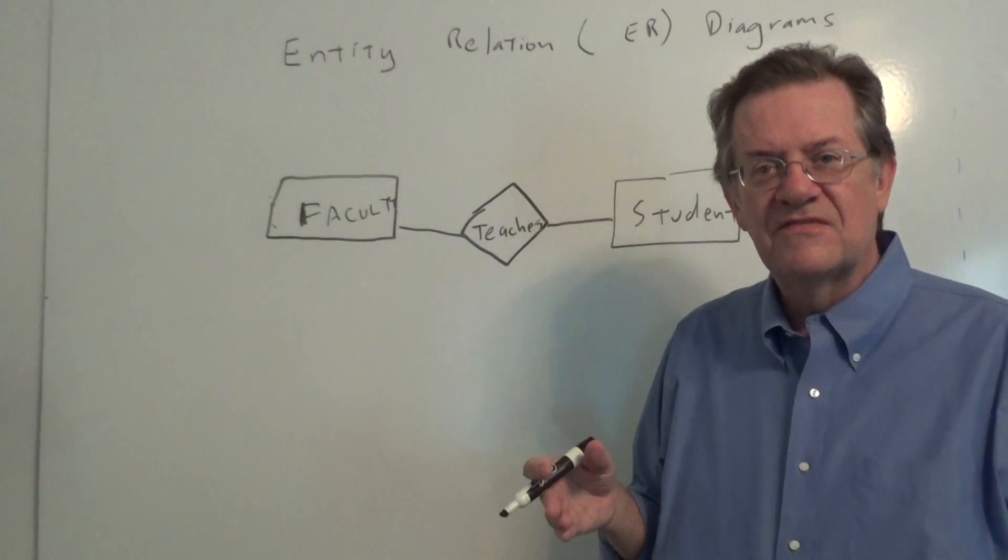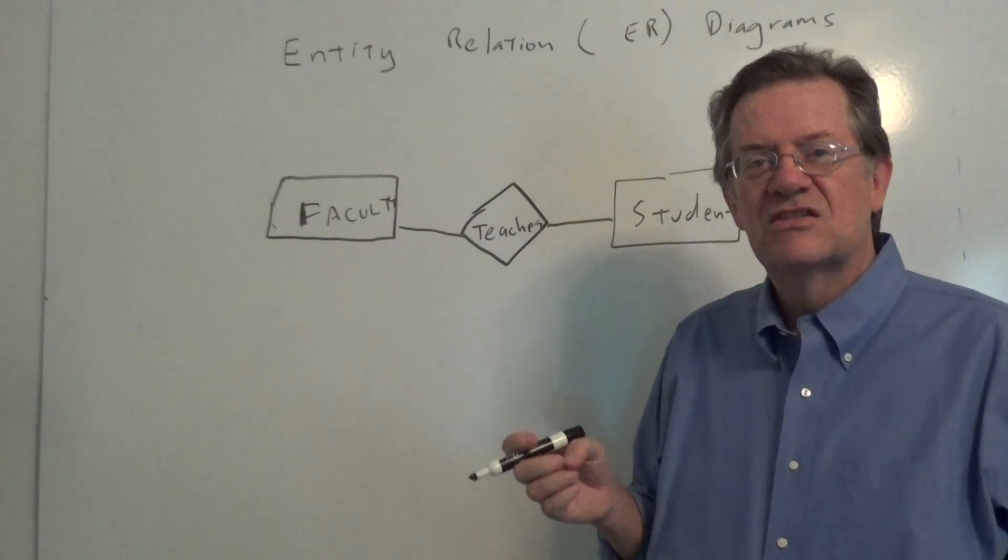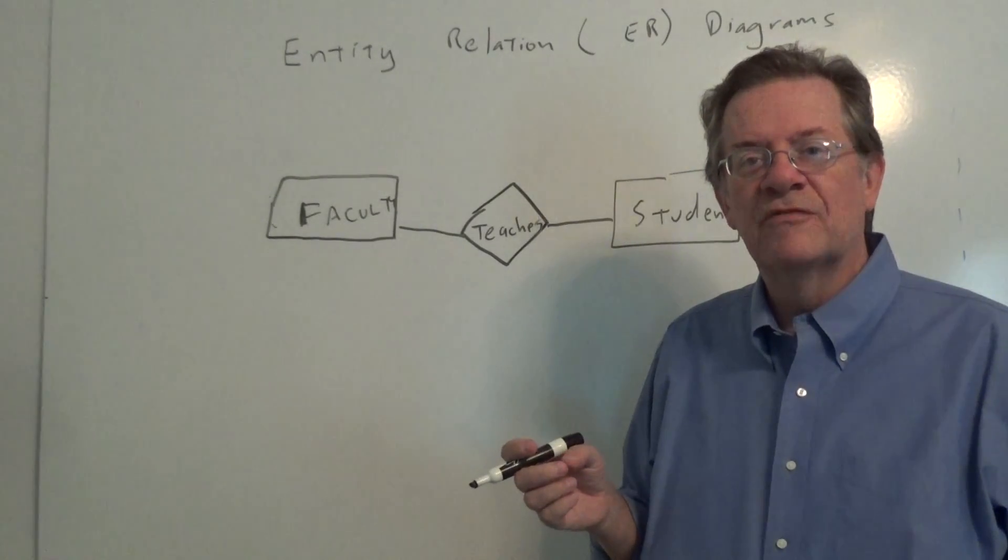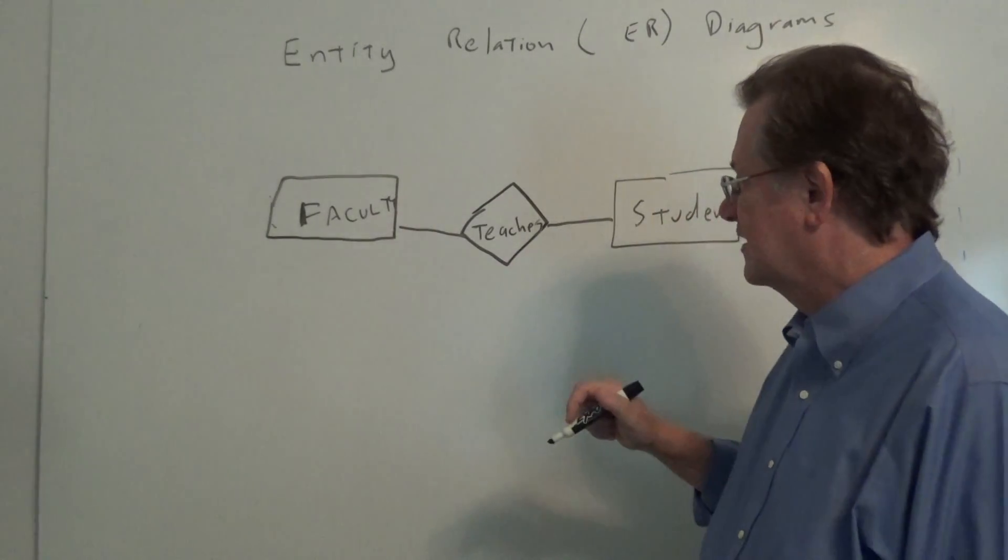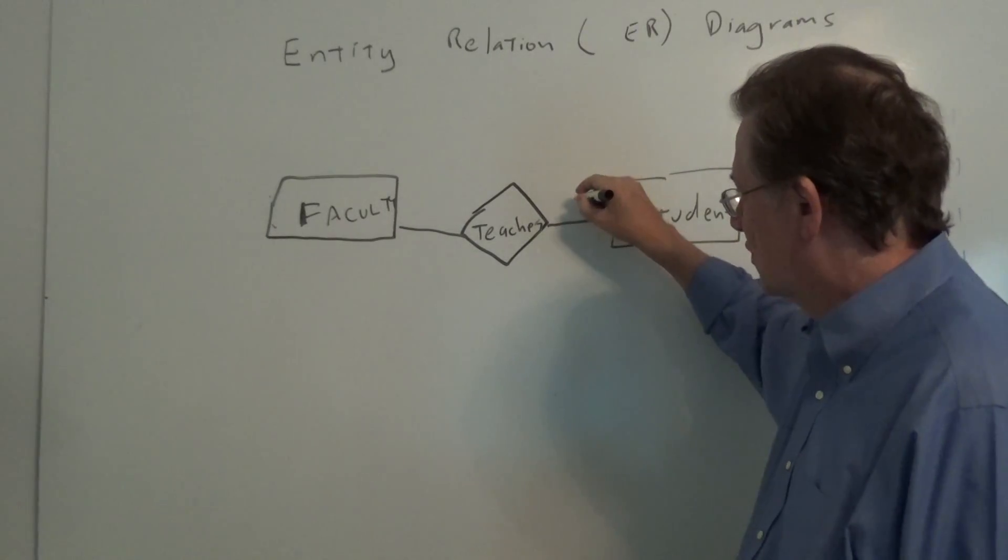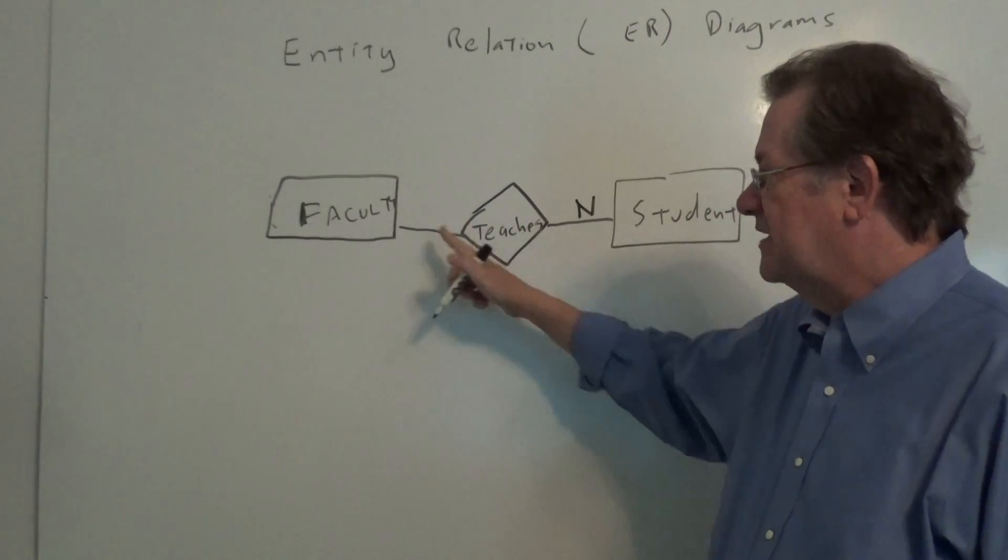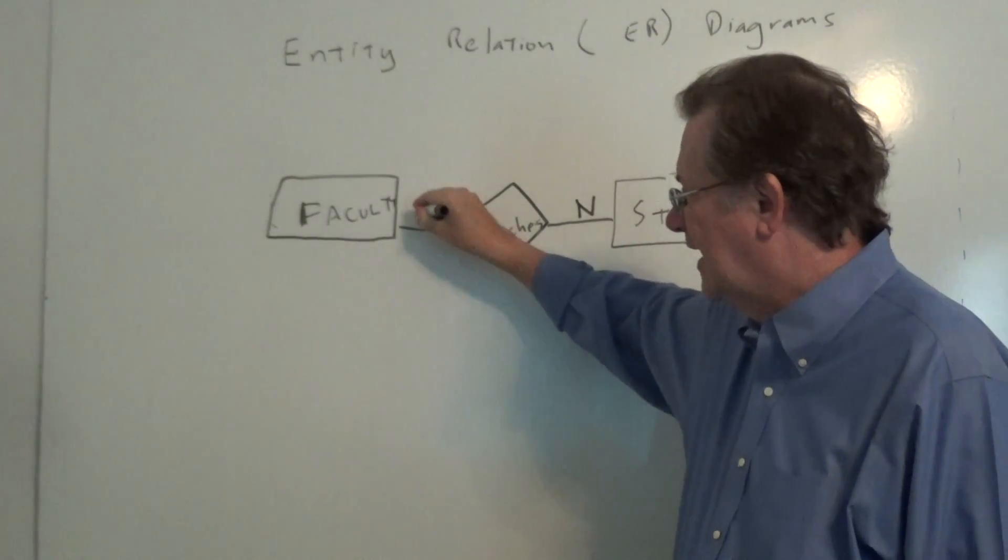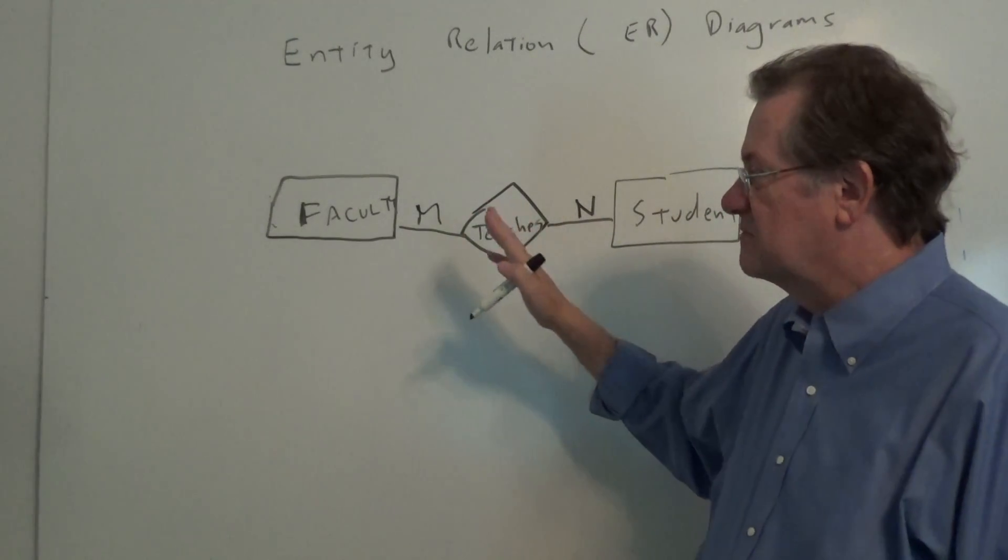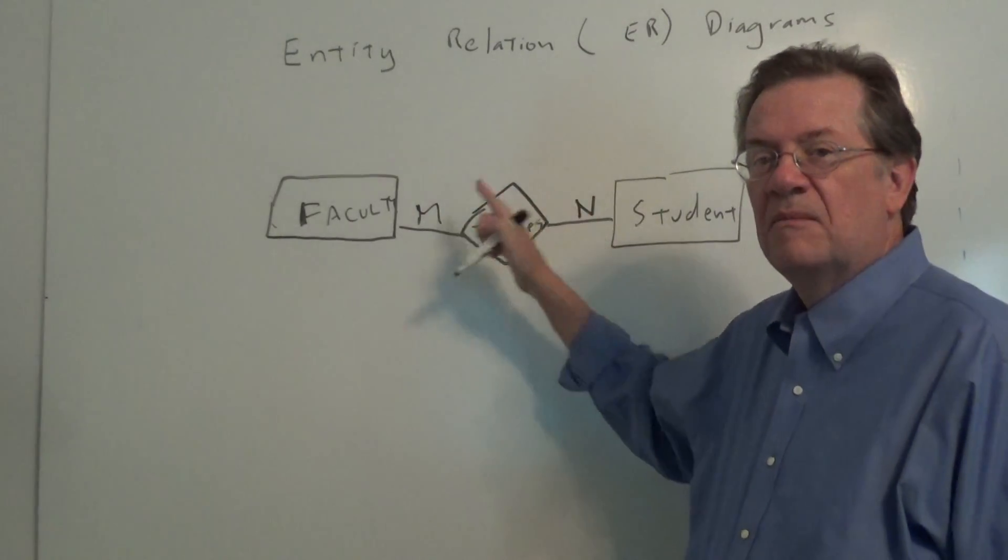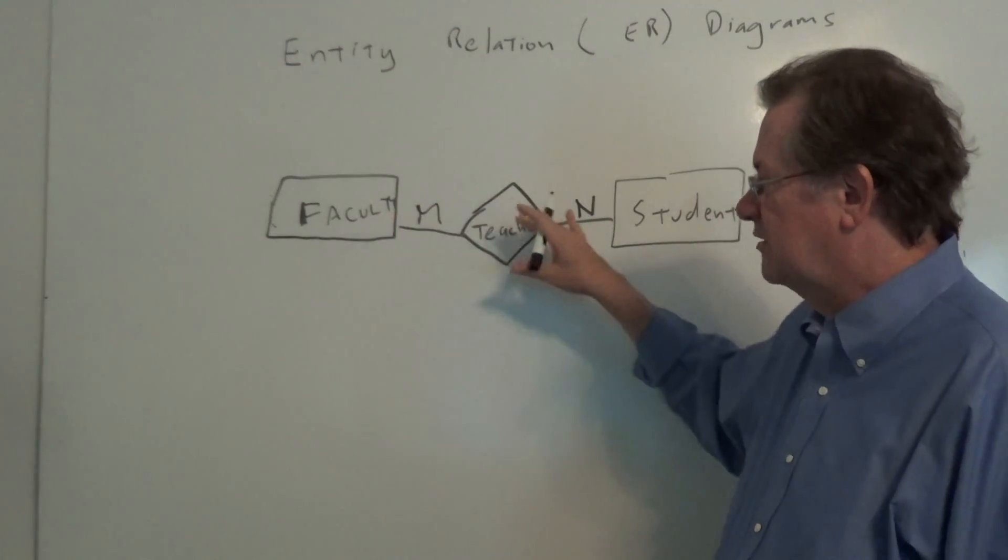Now from a previous video you might have seen in this series, cardinality referred to the number of rows in the table. In this case, cardinality refers to the number of instances that participate in the relationship. So in this case, one faculty member might teach many students. So we put the letter N here. Whereas a student might be taught by many faculty members. And we put the letter M. So we have an M-N relationship. The relationships can sometimes be one to one, one to many, many to one, and in this case many to many. So we have entity, relation, entity.